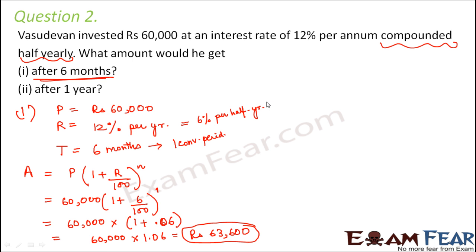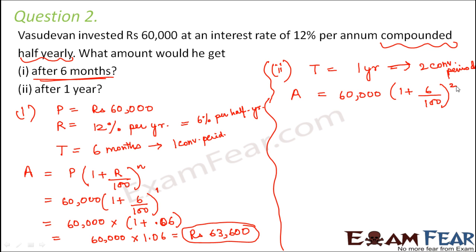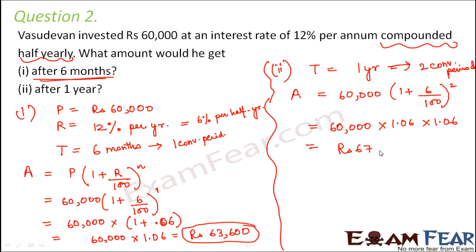Now for the second part: what amount would he get after one year? The time period changes to one year. Since it is compounded half yearly, each half year is one conversion period. One year has two half years, so there are two conversion periods. Amount = 60,000 × (1.06)^2 = 60,000 × 1.06 × 1.06 = rupees 67,416.